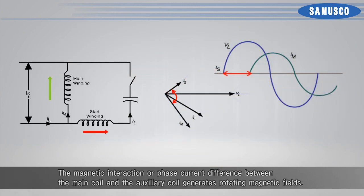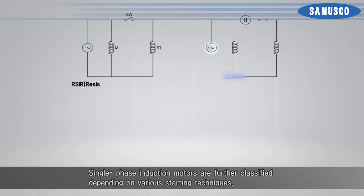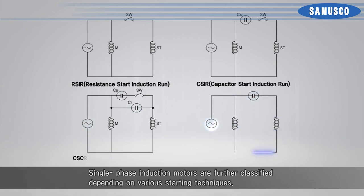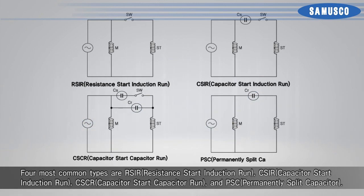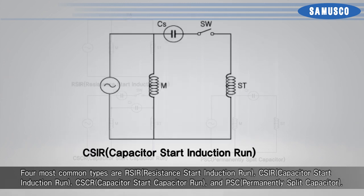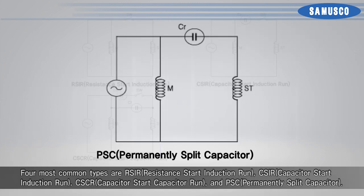The magnetic interaction or phase current difference between the main coil and the auxiliary coil generates rotating magnetic fields. Single-phase induction motors are further classified depending on various starting techniques. The four most common types are RSIR, CSIR, CSCR, and PSC.